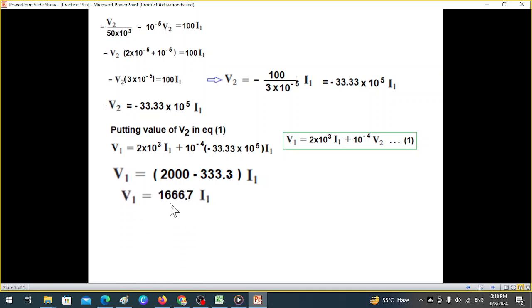our V1 will be 1666.7 I1. And from here we can find the input impedance, which is V1 over I1. And from here you see if you move I1 here, what is left is 1666.7 ohms. And this can also be written in terms of kilo ohms. Just move three decimals to the left. It will be 1.6667 kilo ohms.